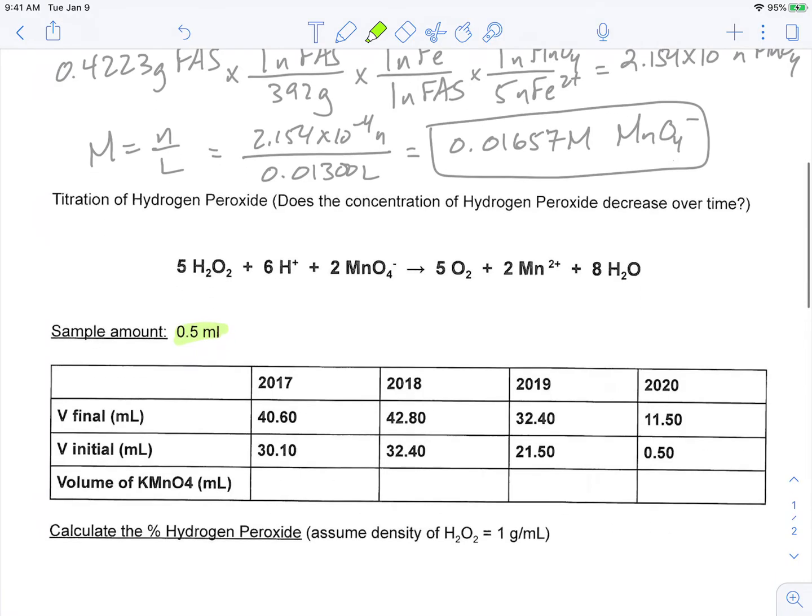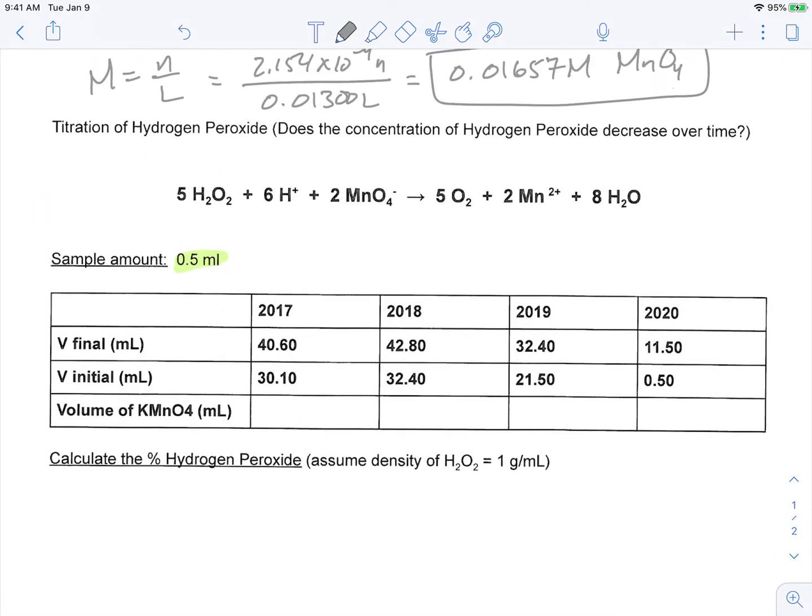So first thing we would want to do is figure out how many milliliters of potassium permanganate we needed to reach a titration. So I'm going to take my final volume minus the initial. And I believe we get here 10.50 milliliters. We have 10.40 milliliters, 10.9, and then we get 11 milliliters. So we can sort of just look at and say, did the concentration of our hydrogen peroxide go down over the years using the same sample size?